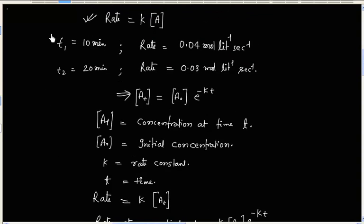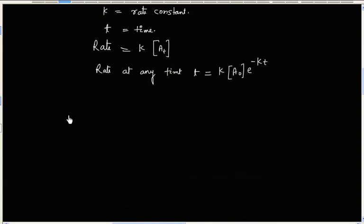Now, we have been given two rates. When time is 10 minutes, rate is 0.04. So 0.04 is equal to k times A0 e to the power minus k and time is 10 minutes.